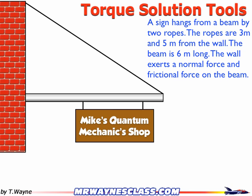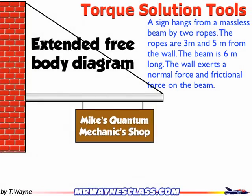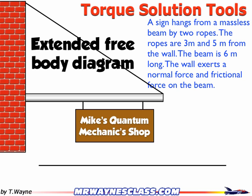This video is going to show you how to utilize two tools when solving problems involving torque. The first tool is called an extended free body diagram. Typically a free body diagram is just a dot representing the body, whatever the object is. Now because we're talking about objects rotating, you're going to draw a line. The line can represent the beam, or it can be the diameter of a round object, but this becomes the body.